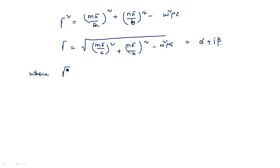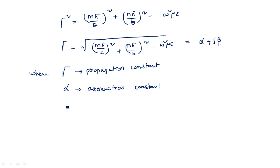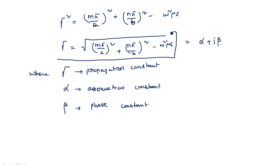Gamma is an operator in the z-direction, the propagation direction — it is called the propagation constant. Propagation constant gamma is a combination of attenuation constant alpha plus phase constant beta.